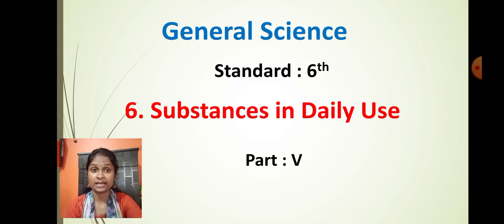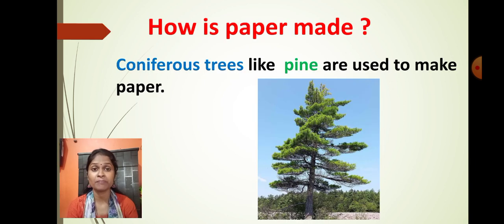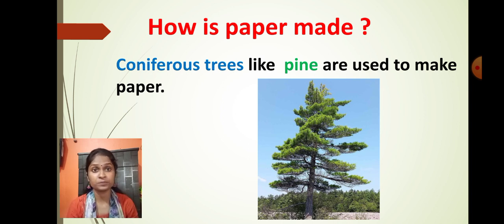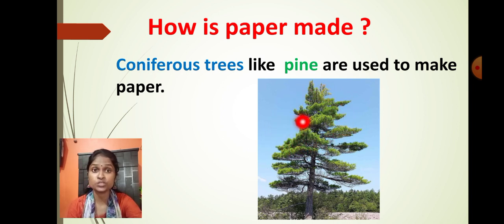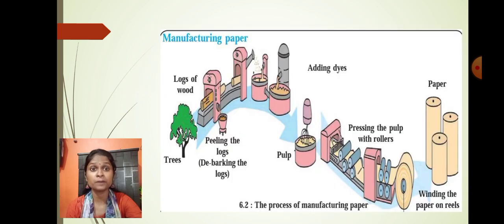In the last lecture, we learnt about the manufacturing of paper. You know that paper is obtained from plants — specifically, coniferous trees like pine are used for the manufacturing of paper. We have already learnt the process of how exactly paper has been manufactured.